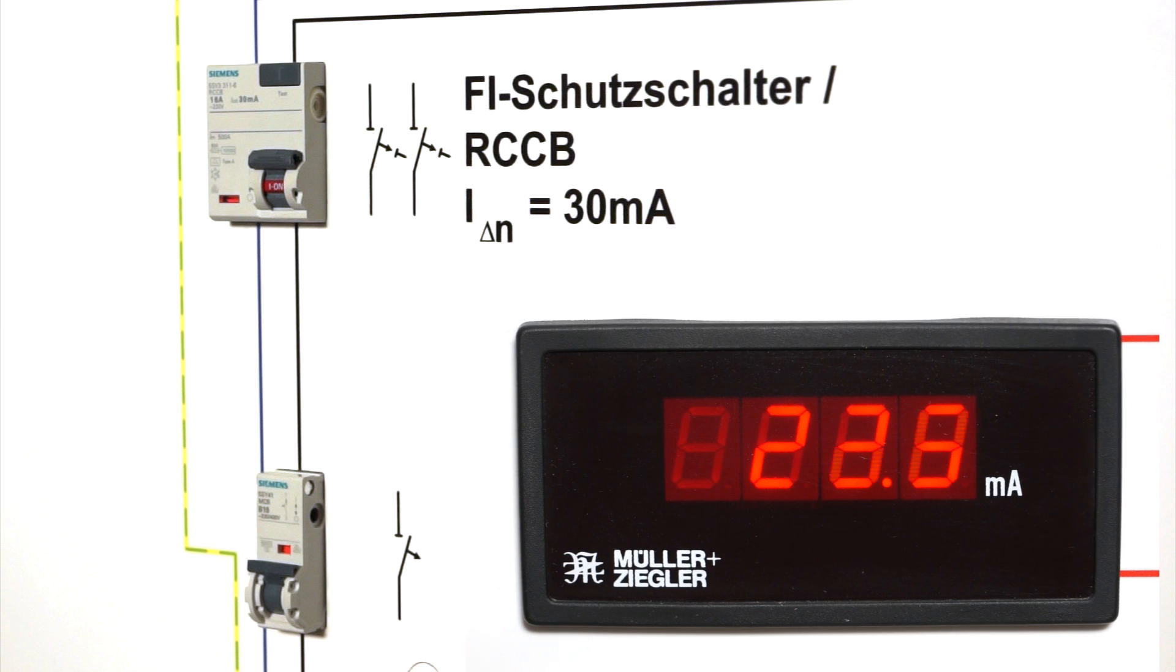The simulation shows how the Siemens residual current operated device trips at 22 milliampere and offers effective protection against dangerous shock currents.